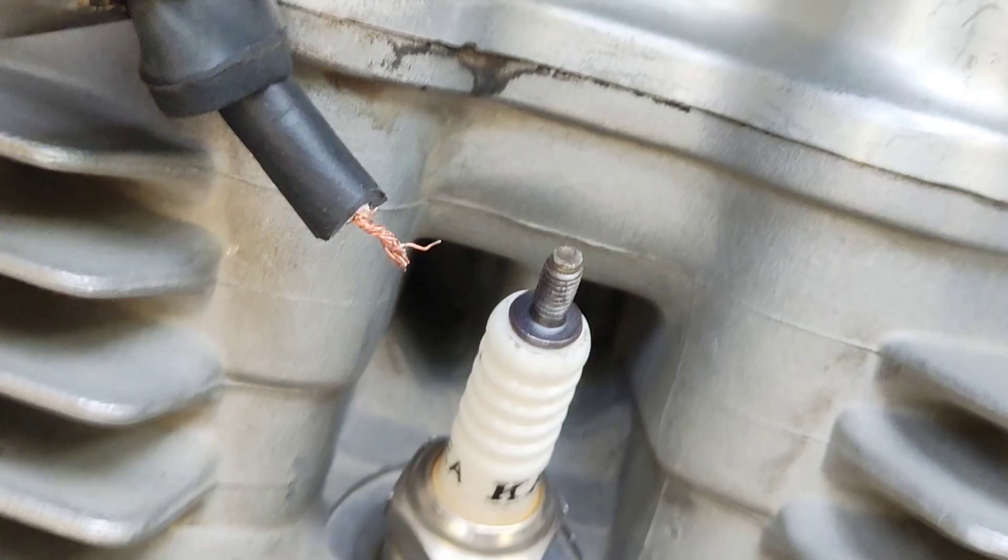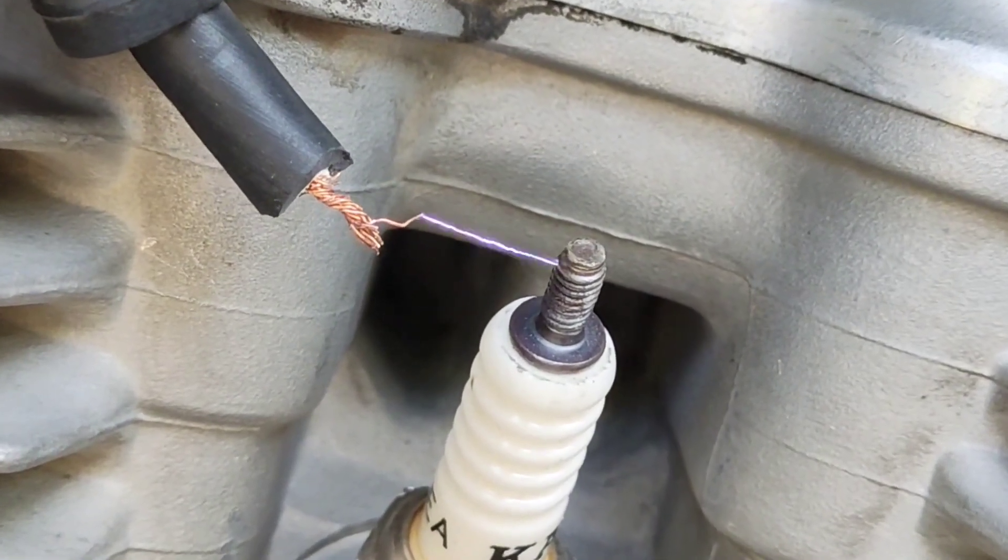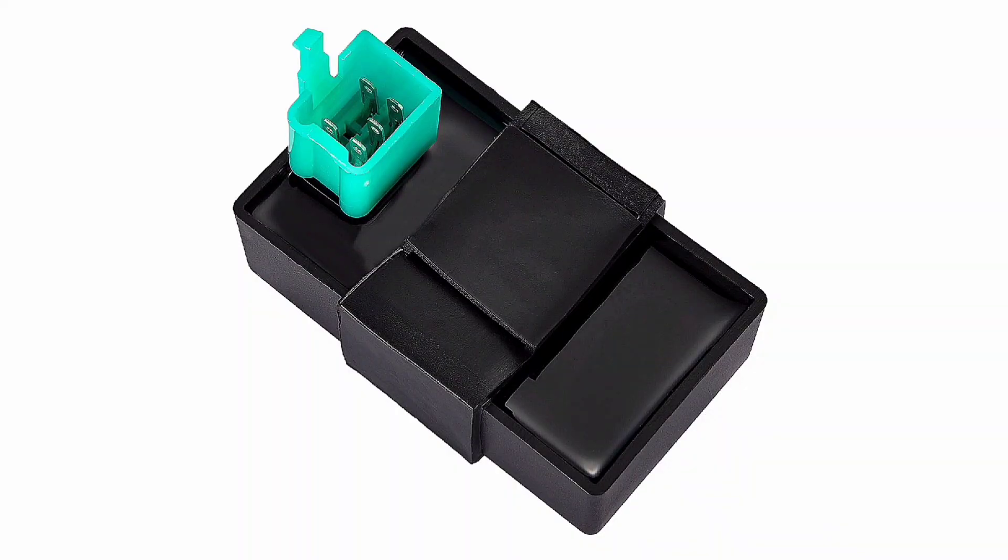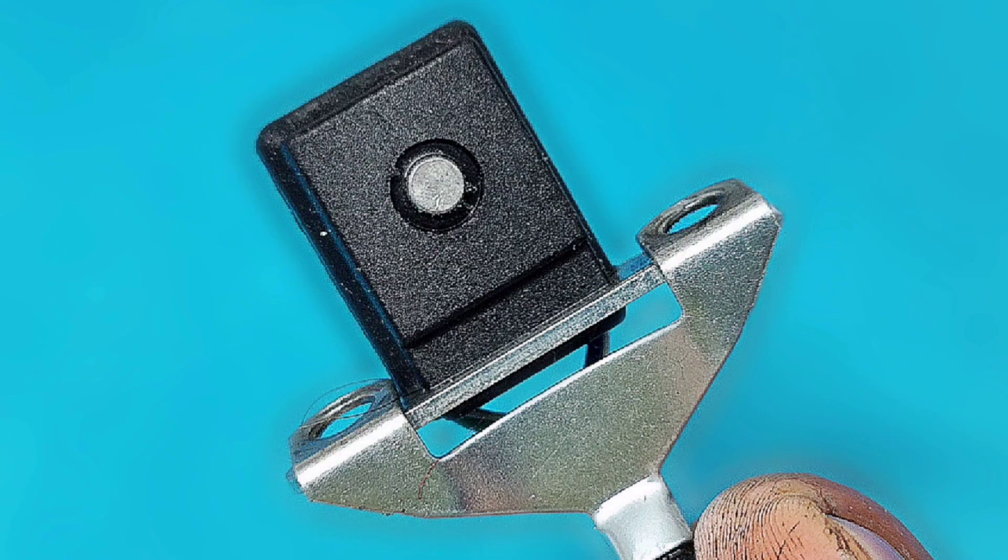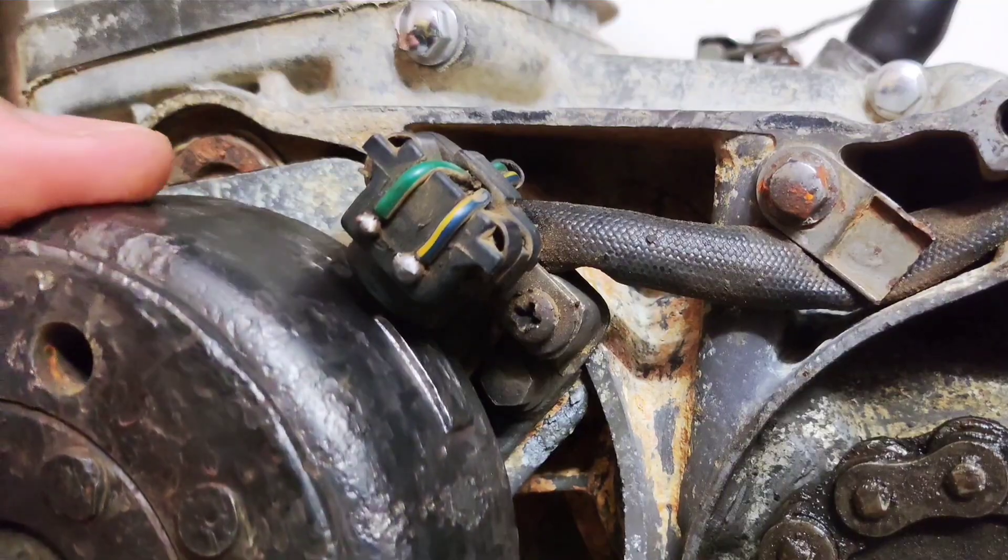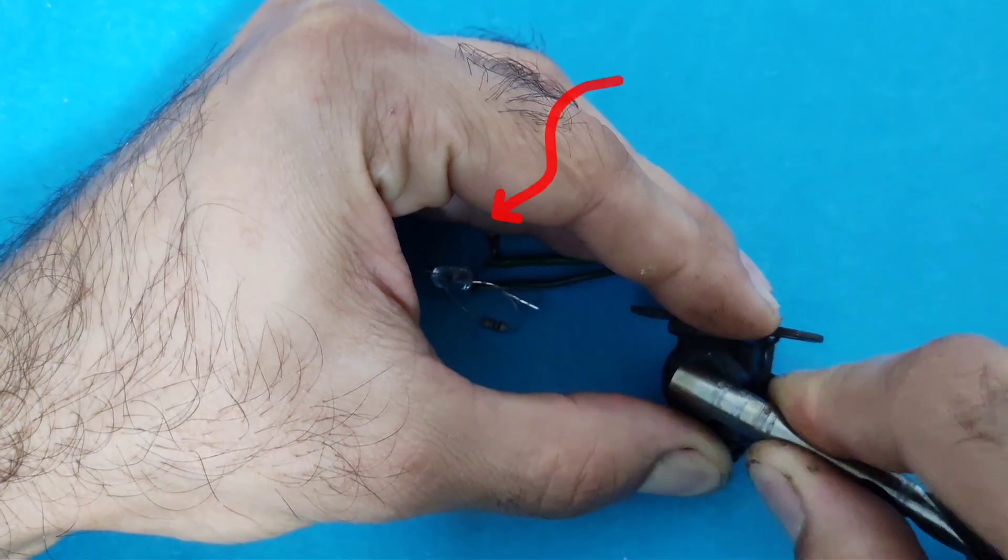Today we're talking about the pickup. A lot of times when the spark suddenly cuts out, it's not the CDI and it's not the ignition coil, it's the pickup coil. Let's see what it is, what it does, and how to test it. Let's go.